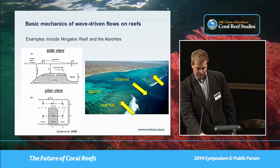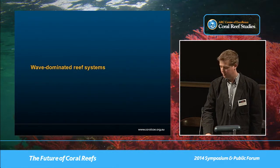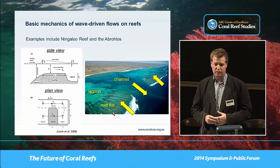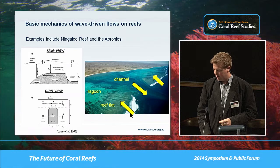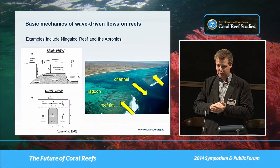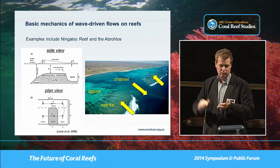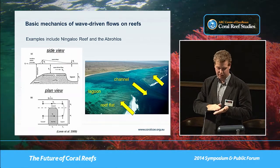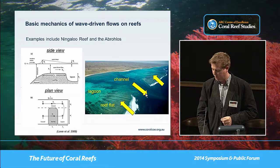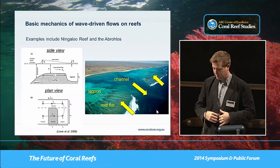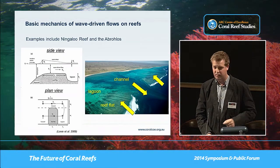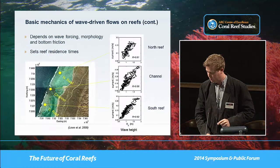First I want to talk about wave-dominated reef systems. Ningaloo reef gets a substantial amount of wave energy. When waves break on a reef, they push water towards shore — across the reef flat into the lagoon — and that water exits back to the ocean through channels. It's essentially a wave pump controlling circulation and the exchange of water between offshore and onshore.